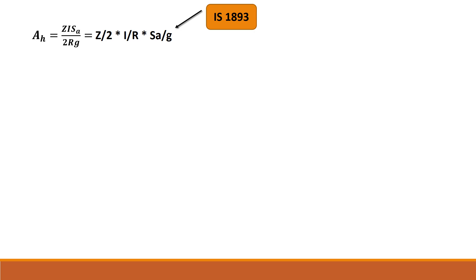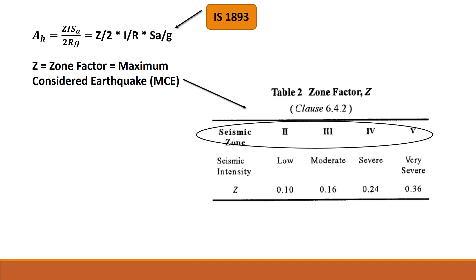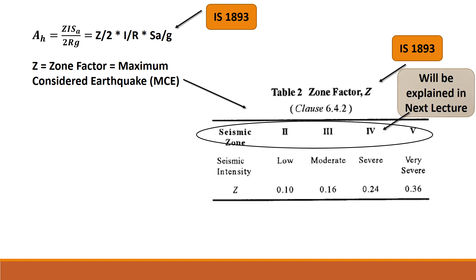SA/g is the spectral acceleration — that is the design spectrum we have already discussed. The Z factor is the zonal factor, based on the maximum considered earthquake. The Z factor is given in Table 2 of IS 1893 and varies from 0.1 in Zone 2 to 0.36 in Zone 5, the very severe intensity zone. These zones will be explained in the next lecture.